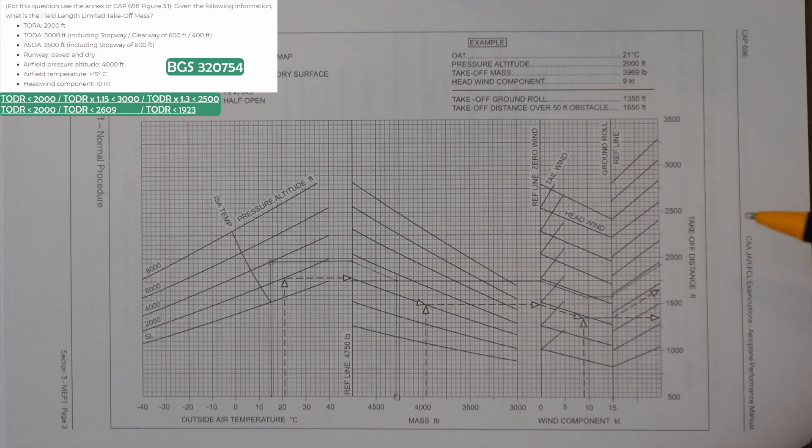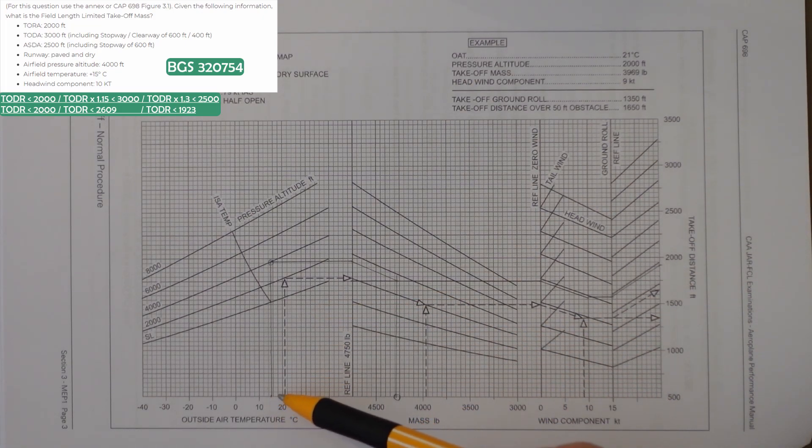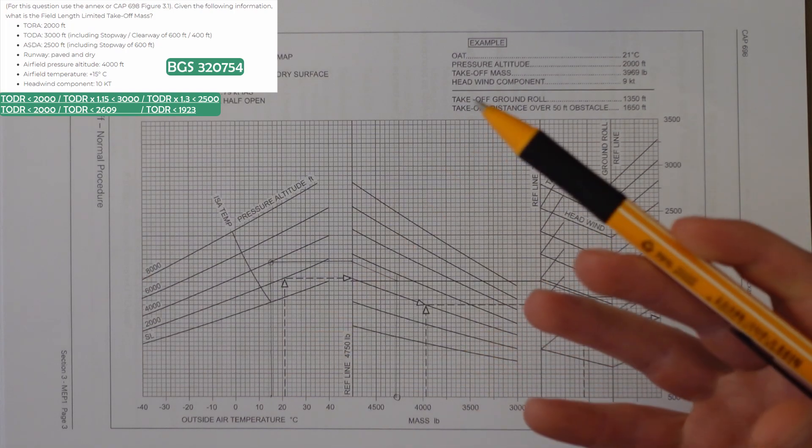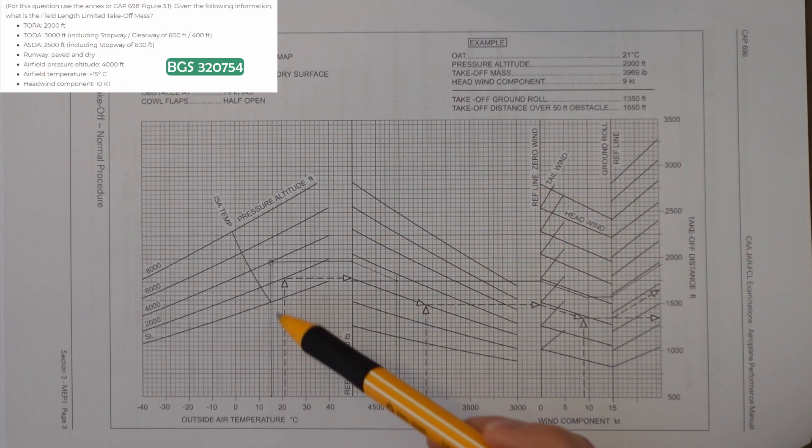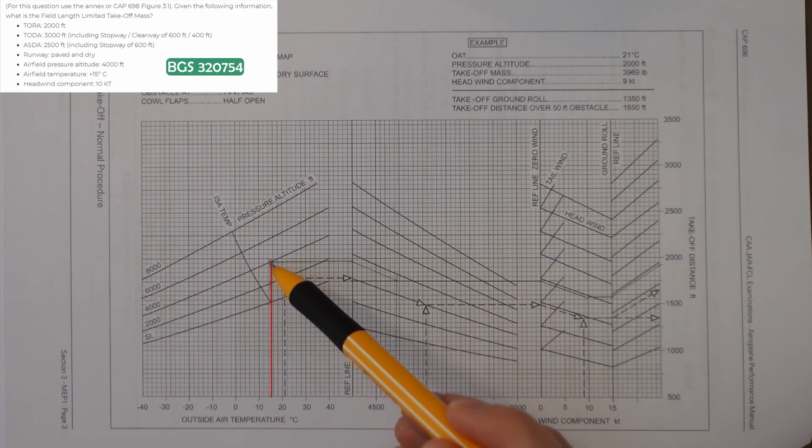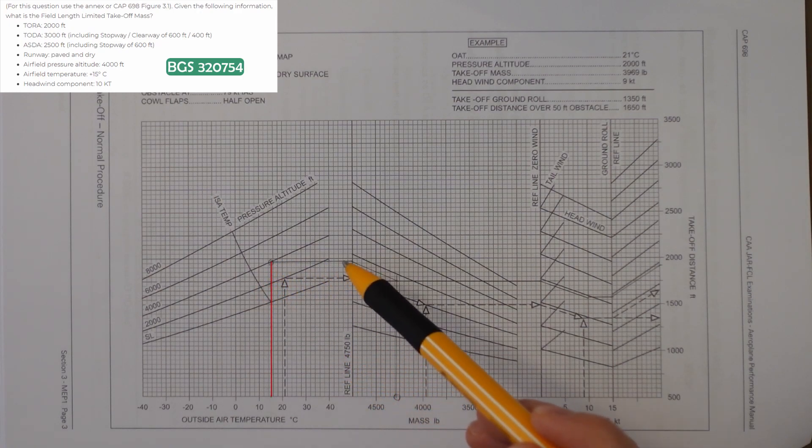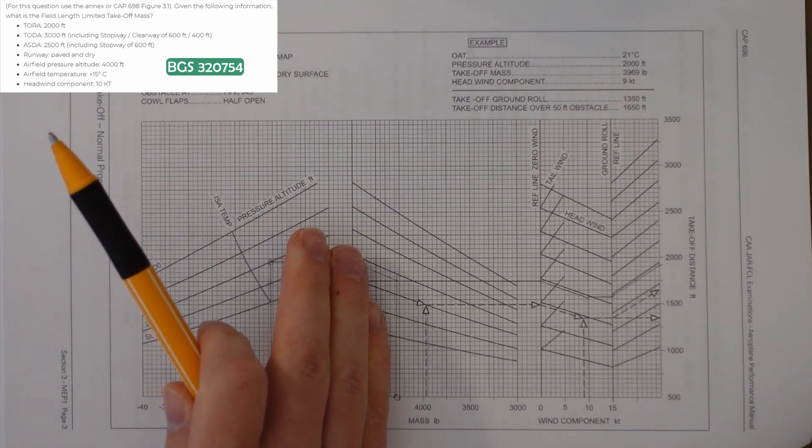So on the graph it's here, just under this line that's next to the 2,000 foot marker. The temperature and altitude have already been put in. I've already put it in on this graph as well just to stop me looking at the back of my head again. We've got 15 degrees and 4,000 feet, which is there. We then go across the reference line and we would stop at that point.